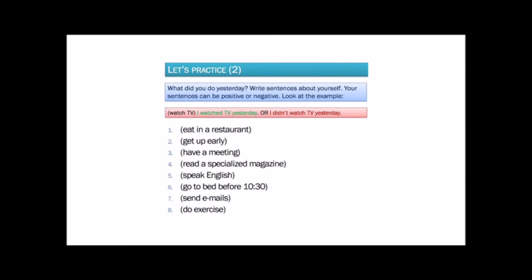Now let's practice making complete sentences. What did you do yesterday? Please write sentences about what you did yesterday. You can write positive or negative sentences. Look at the example: Watch TV. If you did this action, your sentence is positive, so you say: I watched TV yesterday. But if you didn't do the action, you should say: I didn't watch TV yesterday. Do you understand? Write true sentences about you — positive or negative — that depends on you.